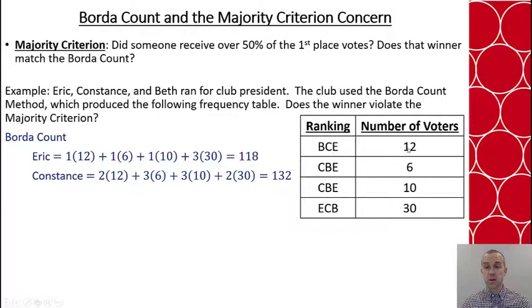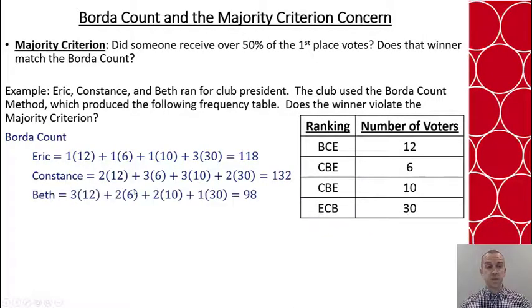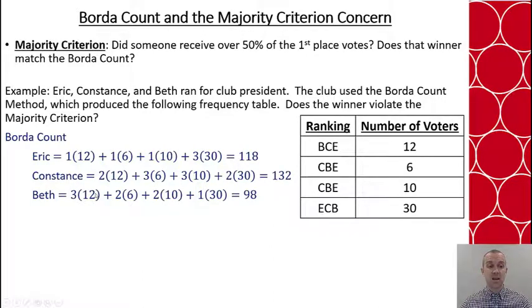Constance gets 2 points for these 12, 3 points for these 6, 3 points for these 10, and 2 points for these 30. Beth gets 3 points for these 12, 2 points for these 6, 2 points for these 10, and 1 point for these 30. Based on the Borda count, Constance would win — she has the most total points.